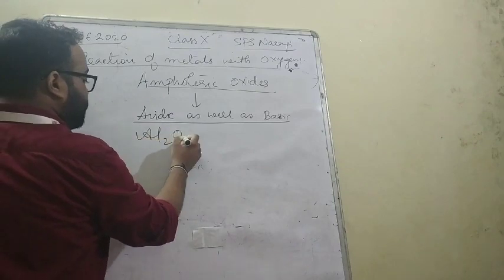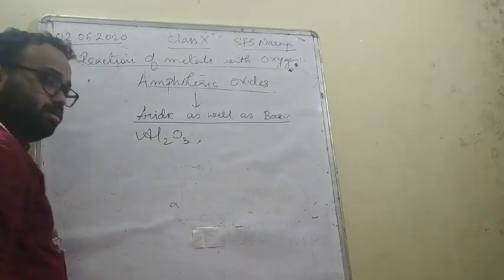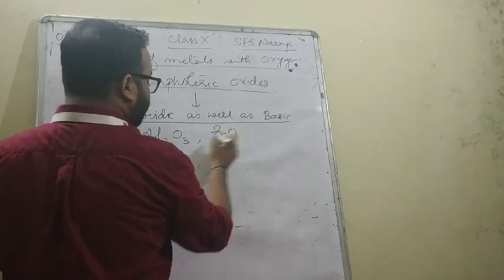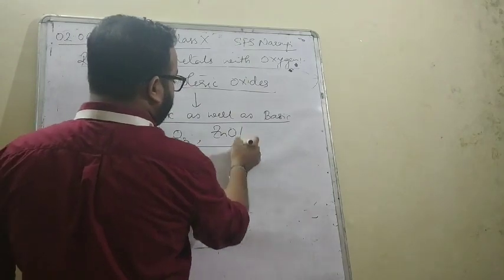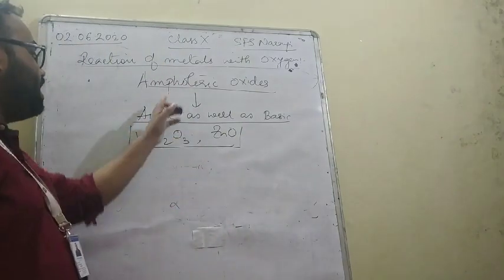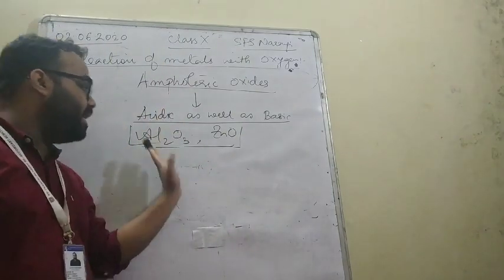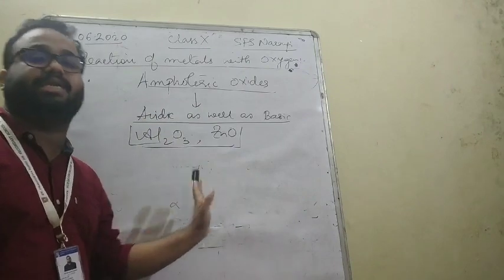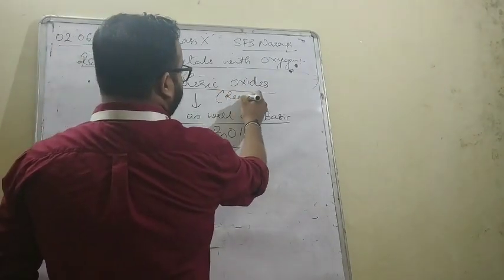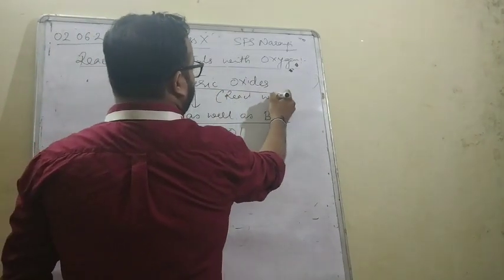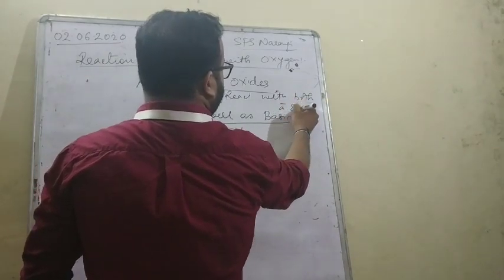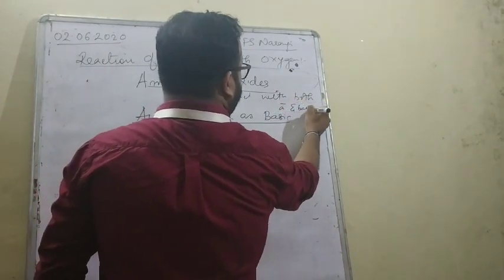Al₂O₃ and ZnO are such oxides which are amphoteric in nature — means they are both acidic and basic. In other words, they react with both acid and base.